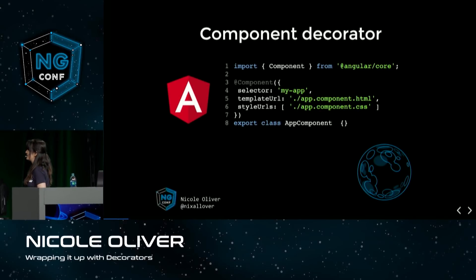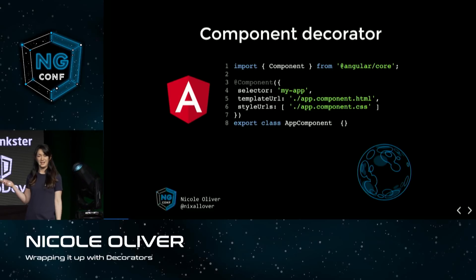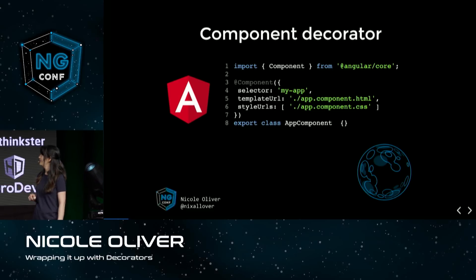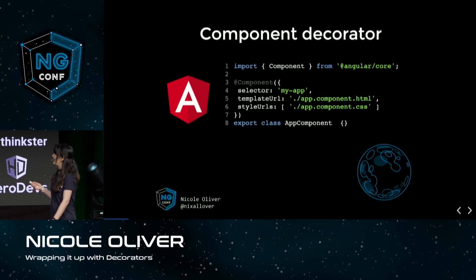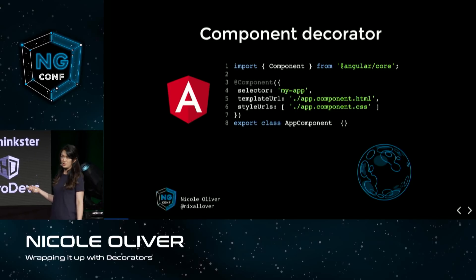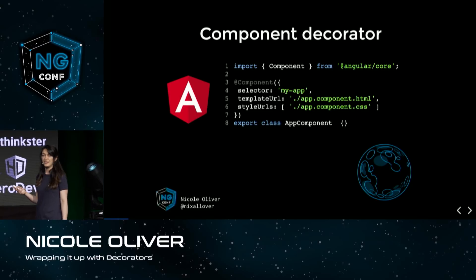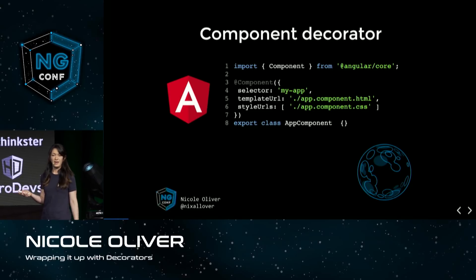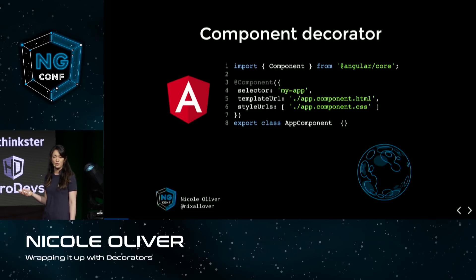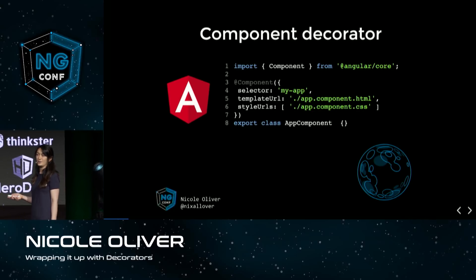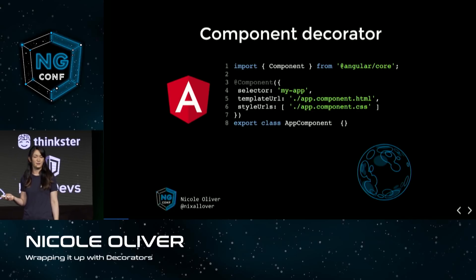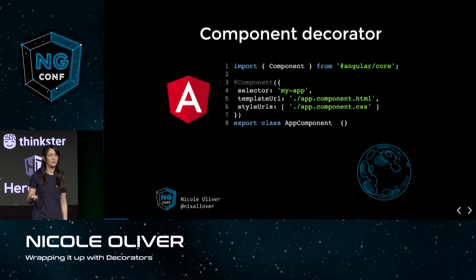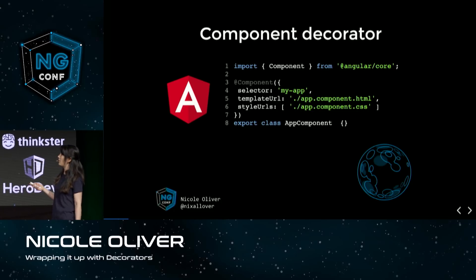We're going to be starting off with something familiar here. This is our component decorator from Angular. It comes from Angular core, so we import it in, and we use it to mark a class as a component class. Here we are passing in some metadata about how we want our component to act and look — the selector, where to find our template and style files, and maybe what change detection strategy we want to use.